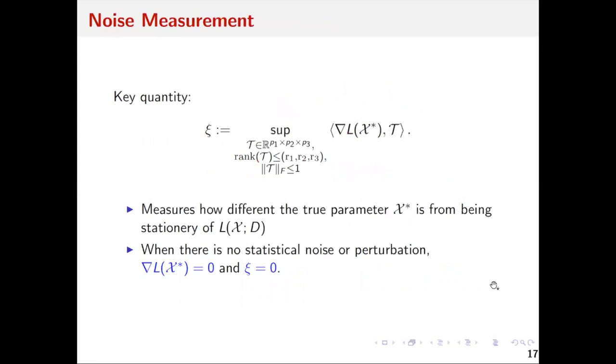How well does this algorithm work? Let's define some key quantities before the formal theorem. This is the CC, defined as the gradient of L evaluated at the true parameter X star, taking the inner product with a low-rank tensor T.